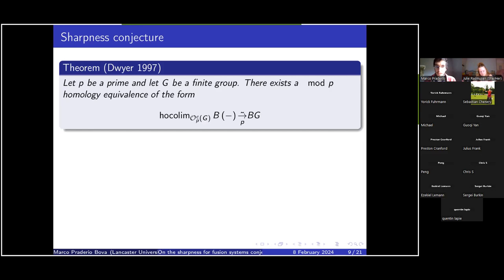To see why we think this conjecture is true, let's take a short look at the analogous case for groups. For a group G, we have a category analogous to the centric orbit category — that is the orbit category of p-centric subgroups of G, which is literally equivalent to the category OFC when F is of the form F_{S,G}. There is a result from Dwyer stating that for every finite group G and every prime p, there is a mod-p homology equivalence from the homotopy limit of the classifying spaces of the p-centric subgroups of G to the classifying space of G.